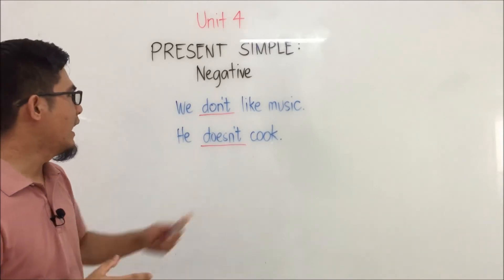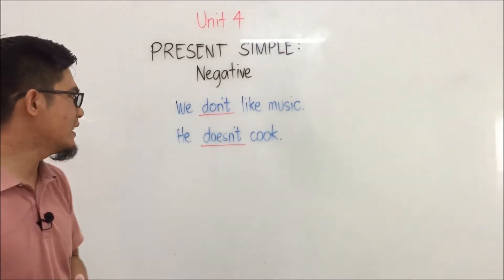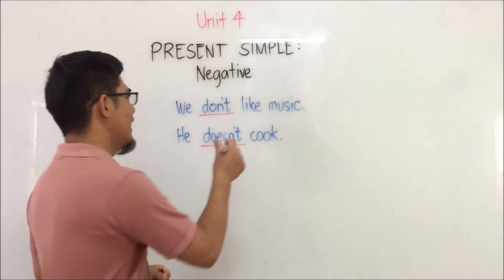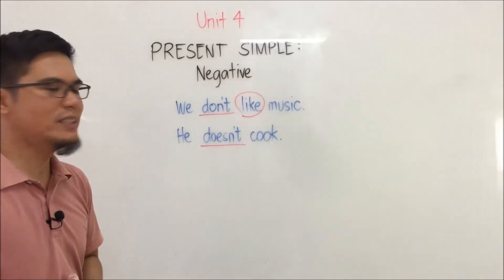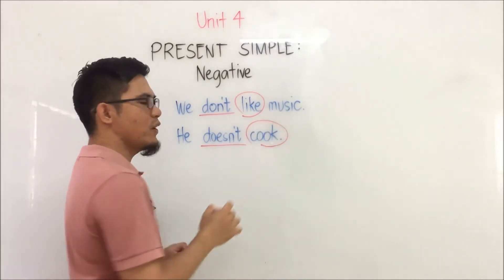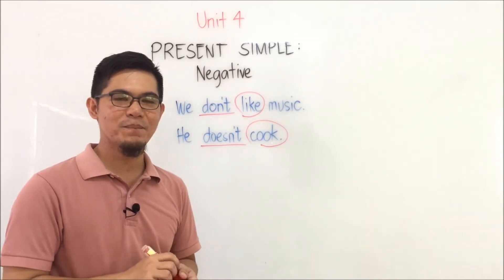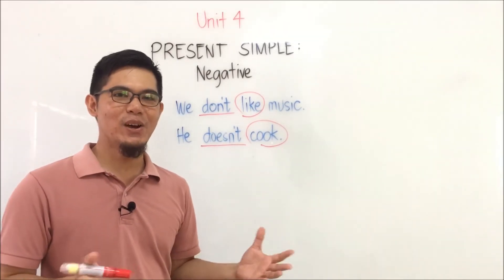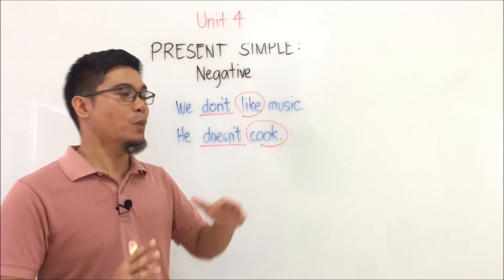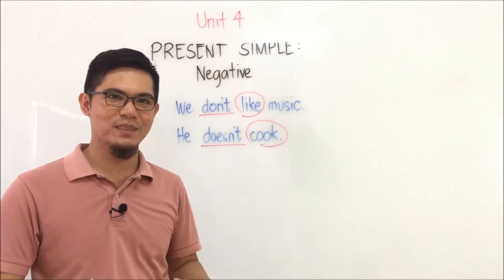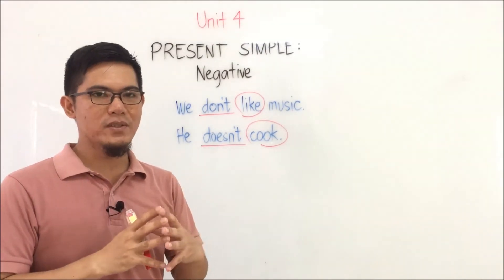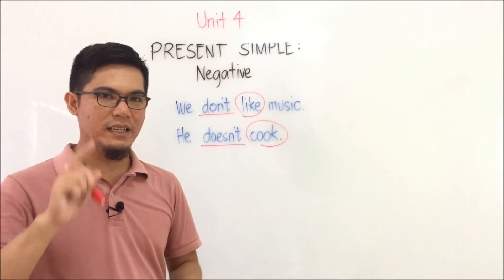What have you observed aside from don't and doesn't? In sentence number one: 'We don't like music' — what's the verb? Like. Number two: 'He doesn't cook' — what's the verb? Cook. Do we need to put s? No. Do we need to put es? No. Do we need to put ies? No. So all the verbs used in the negative are in the base form.